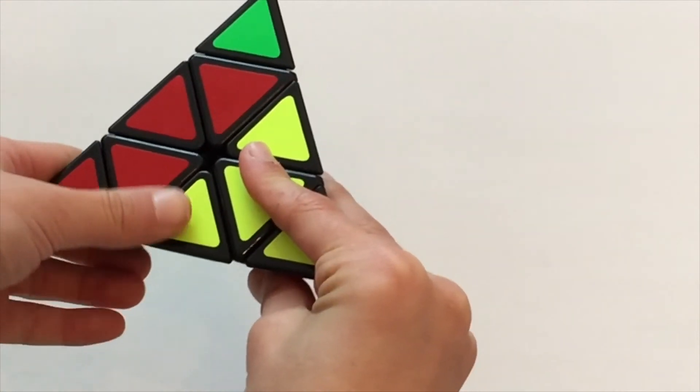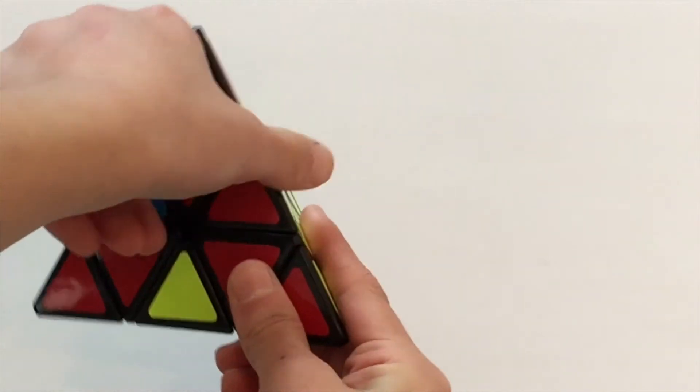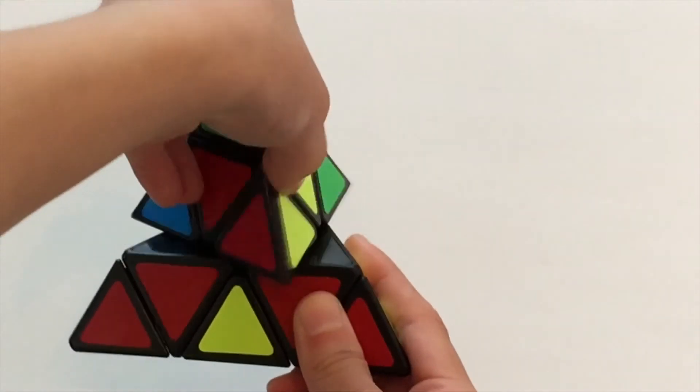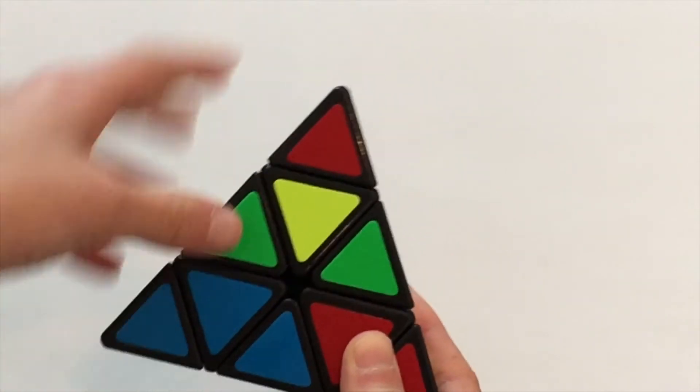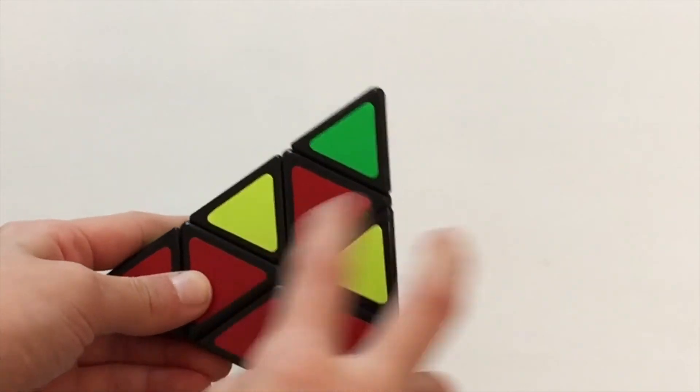If your Pyraminx has the same case except this one is the one that's incorrect and this one is the one that's right, you do the same thing except starting with this one. So you would bring this down first, then bring this down, bring this up and bring this up, and then insert it in like we did before since this blue piece just got taken out. So bring that away, bring this up and then insert it in. And now you'd have headlights once again.